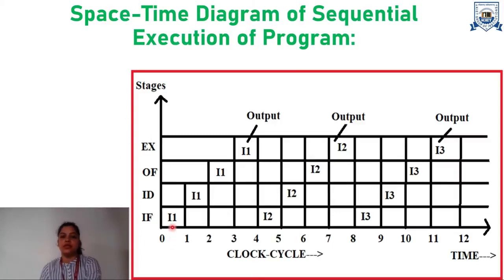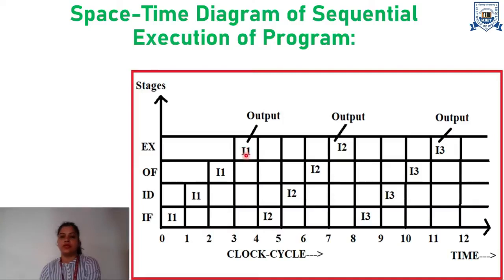First of all, instruction 1 will be executed and its four stages will be executed in this order. From time 0 to 1, the first stage of instruction 1 will be executed. Then from time 1 to 2, the next stage of instruction 1 will be executed. Within the time 2 to 3, the third stage of the instruction is executing. And at last, from time 3 to 4, the last stage of instruction 1 gets executed, after which we get the output of instruction 1. In the same way, we get the output of instructions 2 and 3. So in this way, we can observe the space-time diagram of the sequential execution of the program.